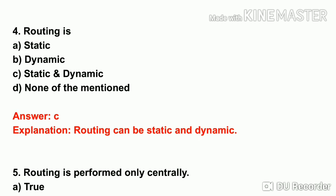The fourth question: routing is dash — options: static, dynamic, static and dynamic, or none. Looking at the routing concept, routing is a process of selecting a path. Over a network there is some traffic — more on some paths, less between others — and routing selects the correct path for the traffic.